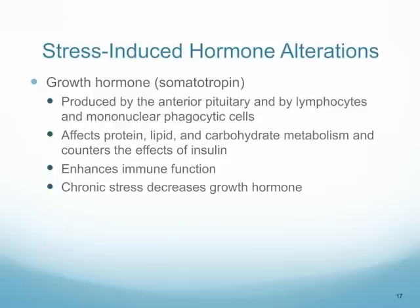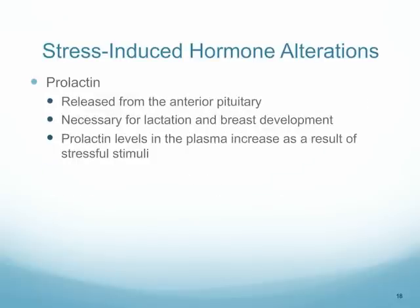Growth hormone is released in an attempt to rebuild areas that have become injured. It also enhances immune function at the area of insult, but it can affect the way we metabolize protein, lipids, and carbohydrates, and may counter the effects of insulin. Prolactin is another hormone released during the stress response — primarily responsible for lactation and breast development — but it increases as a result of stressful stimuli and can lead to decreases in immune capabilities.